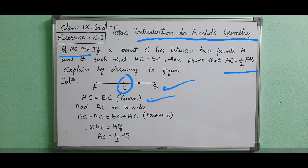Add AC on both sides. What axiom 2 states: if equals are added to equals, the wholes are equal. That's why we are adding AC plus AC equals BC plus AC. AC plus AC means it is 2AC.